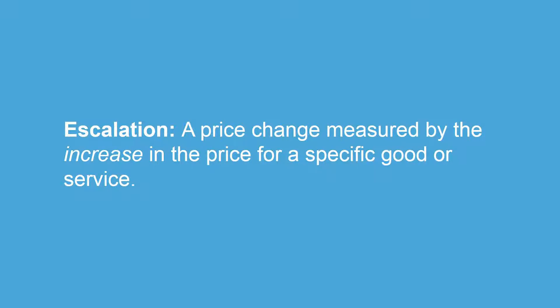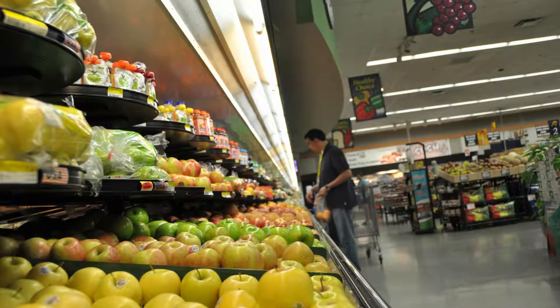Recall the definition of escalation from video one. Escalation is a price change, measured by the increase in the price for a specific good or service. Imagine you're at a grocery store, looking to buy some apples. As you are selecting apples to purchase, you recall that the price per pound has changed. The exact same apples were cheaper last year, and the price per pound has increased. Since you observed this change in price, we know that this is a result of escalation, because escalation is observable.